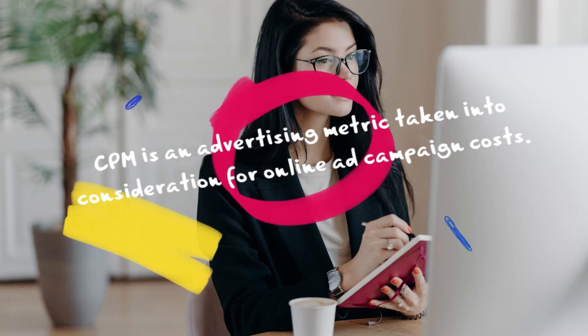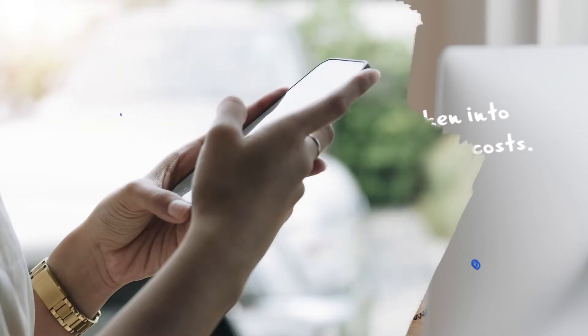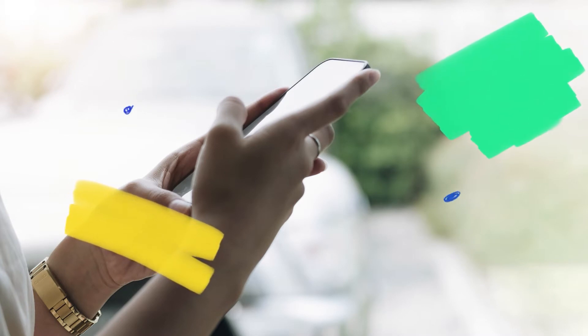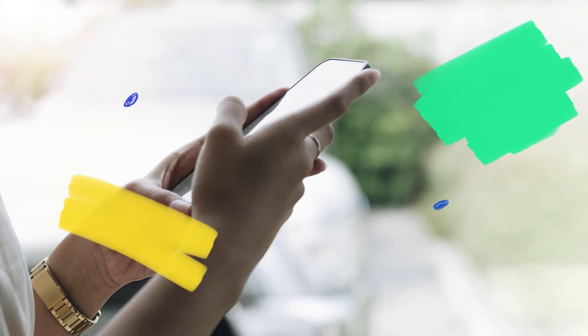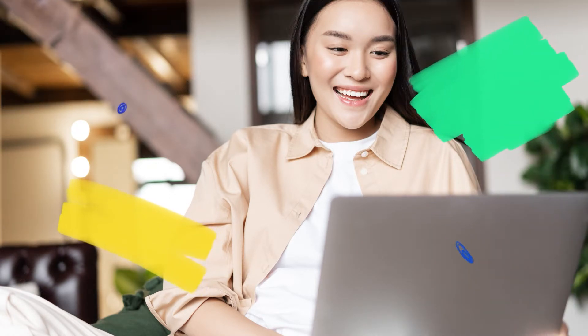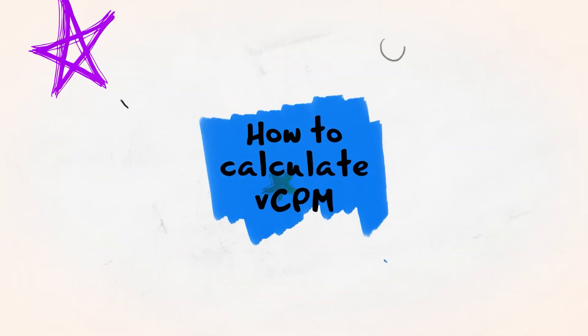In other words, if an ad appears on your screen then you've made an impression on someone, even if they don't see it or care. This costs money and can be expensive for advertisers. CPM is an advertising metric taken into consideration for online ad campaign costs — it's all about estimating the cost of the ad every time it appears. On the contrary, vCPM stands for cost per thousand viewable impressions, meaning advertisers pay based on viewable impressions.